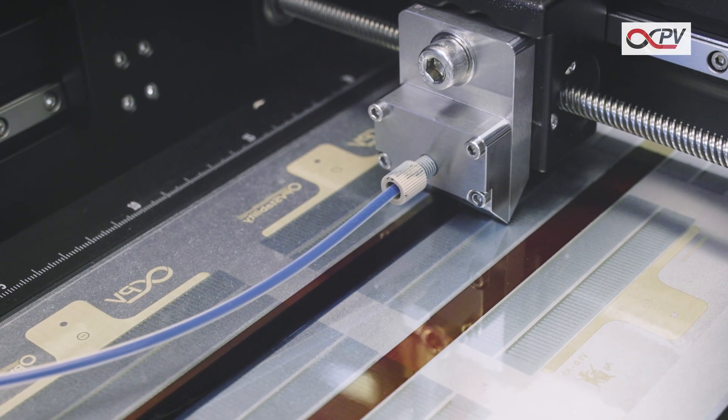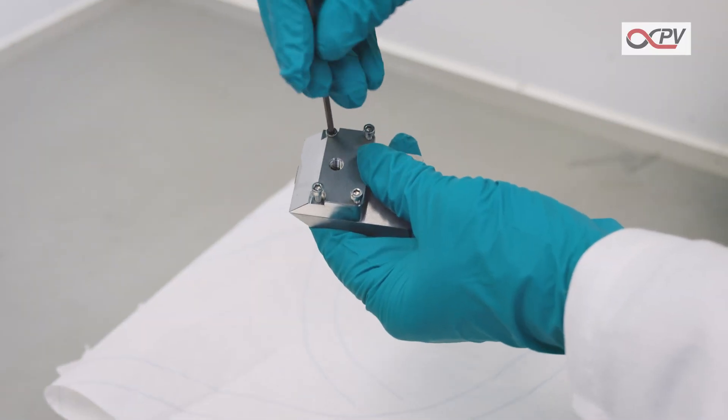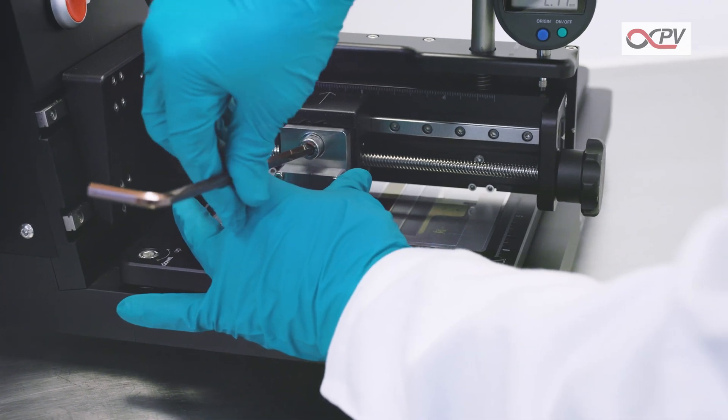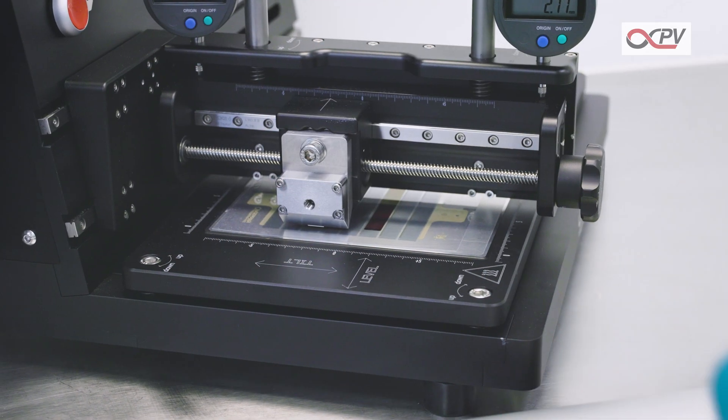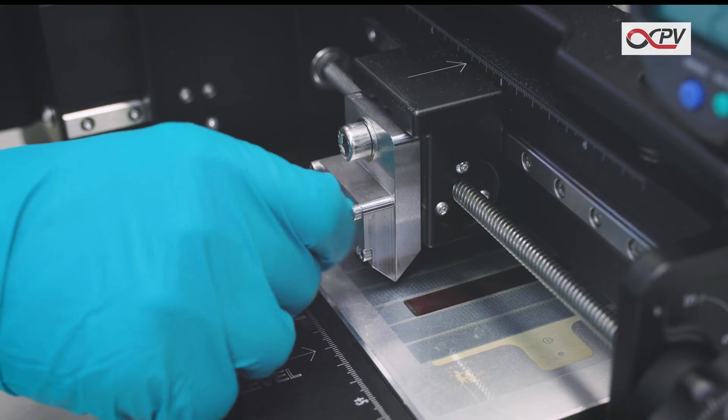Now it's time to apply the hole conducting layer. Start by assembling the Slot Dye Head and mount it onto the Slot Dye Coater. Align its cross-web position with a slight offset relative to the first stripe. Repeat the previous actions to coat a hole conduct layer on top of the active layer.